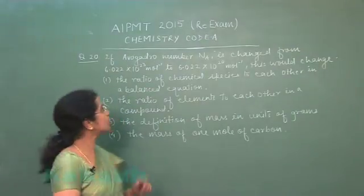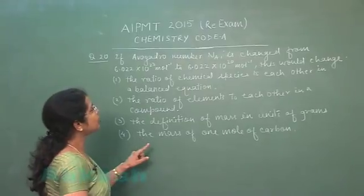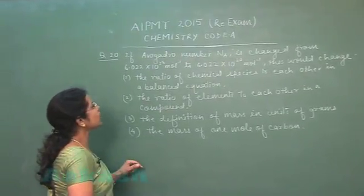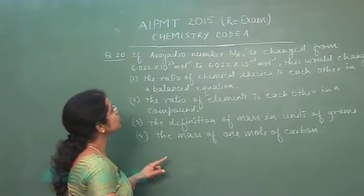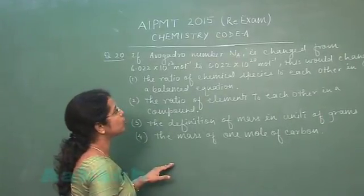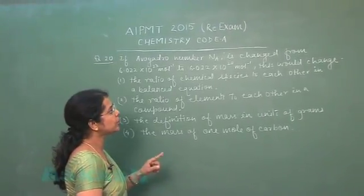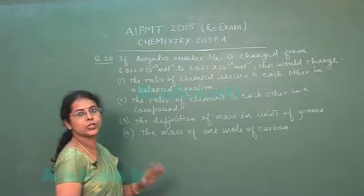So next question of paper, question number 20. If Avogadro's number NA is changed from 6.022 × 10^23 per mole to 6.022 × 10^20 per mole, this would change: